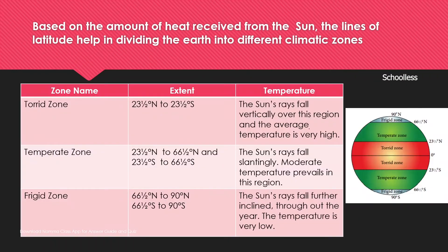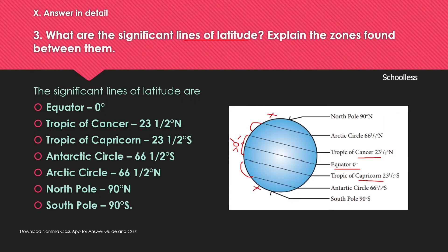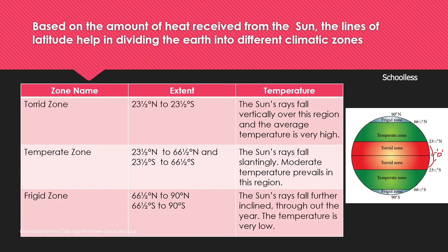Let's talk about heat zones. There are three heat zones: the Torrid Zone, the Temperate Zone, and the Frigid Zone.